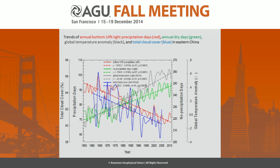That's our theory. Here is what we deduced for eastern China. The gray profile is the global temperature anomaly from 1955 to 2010. The green is the number of dry days without rain. The red shows the bottom 10% drizzle — very light precipitation — has been decreasing with temperature increase. The blue shows light and moderate precipitation, along with total cloud cover, has been decreasing.